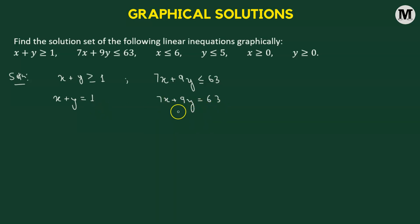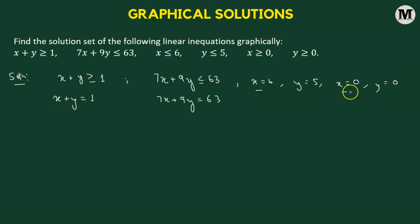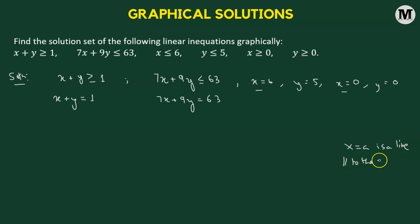We can also plot this on the same xy plane. Then we have x equals to 6, y equals to 5, x equals to 0, and y equals to 0. For x equals to 6 and x equals to 0, both have the form x equals to A, and any such line is parallel to the y-axis. For x equals to 6, the x-intercept is 6, and for x equals to 0, the x-intercept is 0 — in other words, x equals to 0 is simply the y-axis.